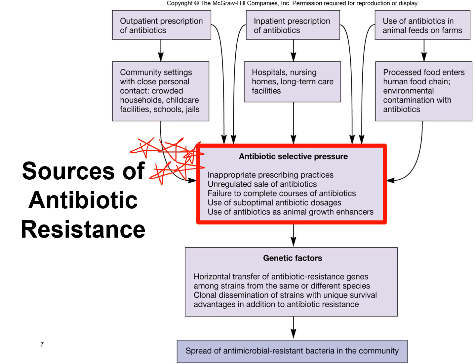The first cause is inappropriate prescribing practices — physicians prescribing antibiotics for viral infections. Antibiotics only target bacteria, not cold viruses, but patients want a pill to fix their problem and doctors sometimes cave in. The antibiotic then exposes all of the patient's microbiome to that drug, killing susceptible bacteria while selecting for those with resistance mutations, which then survive, reproduce, and create a resistant bacterial population.